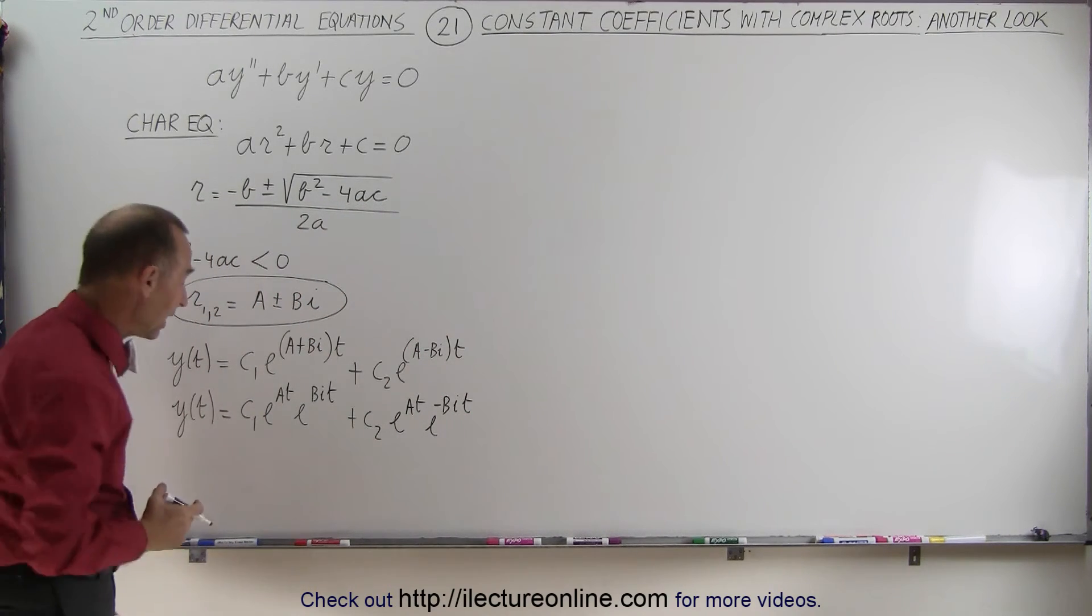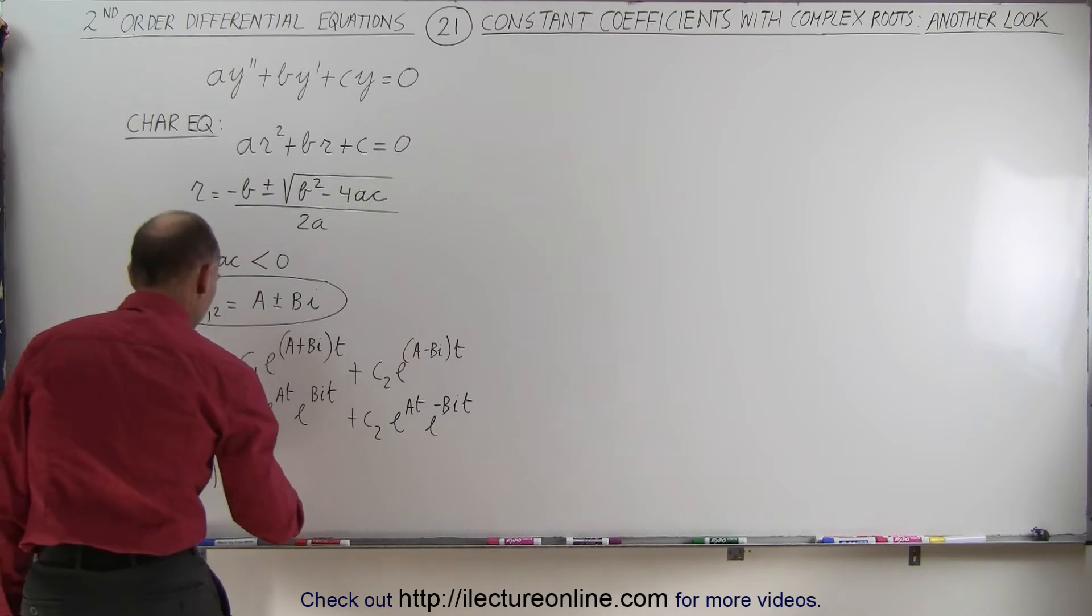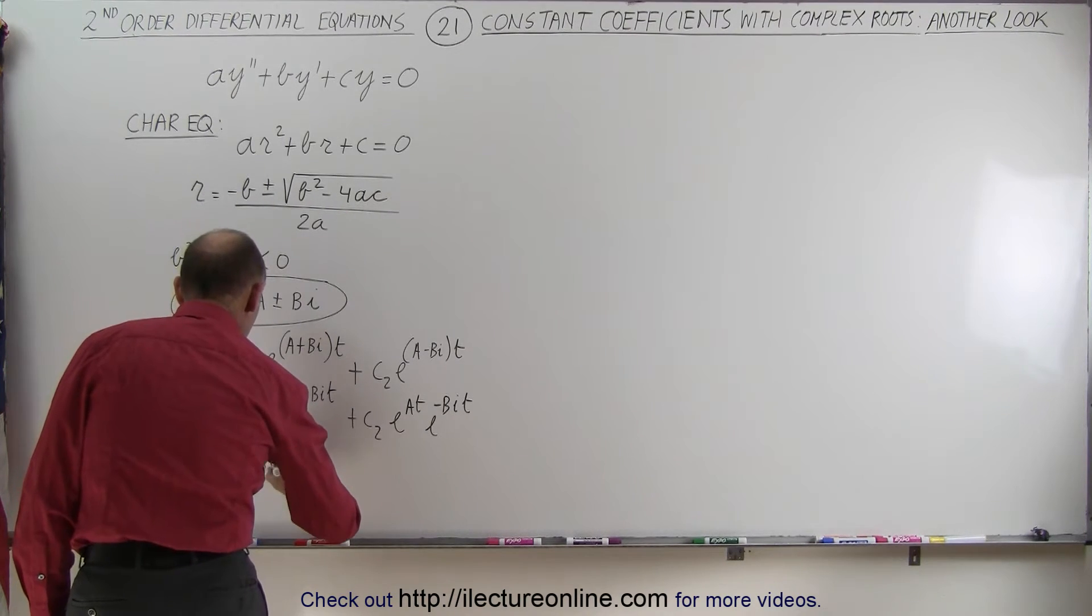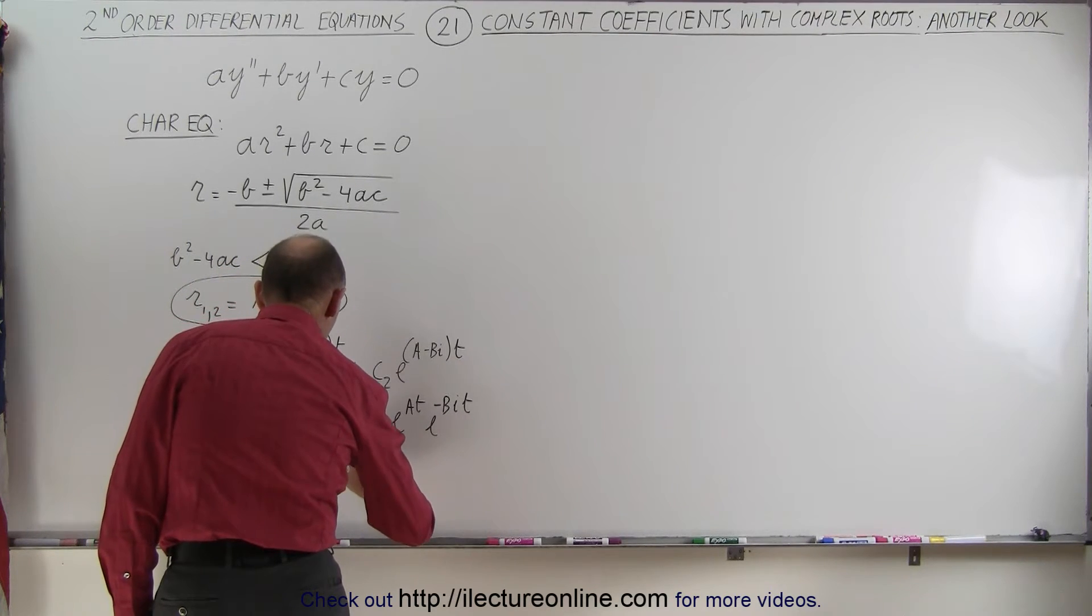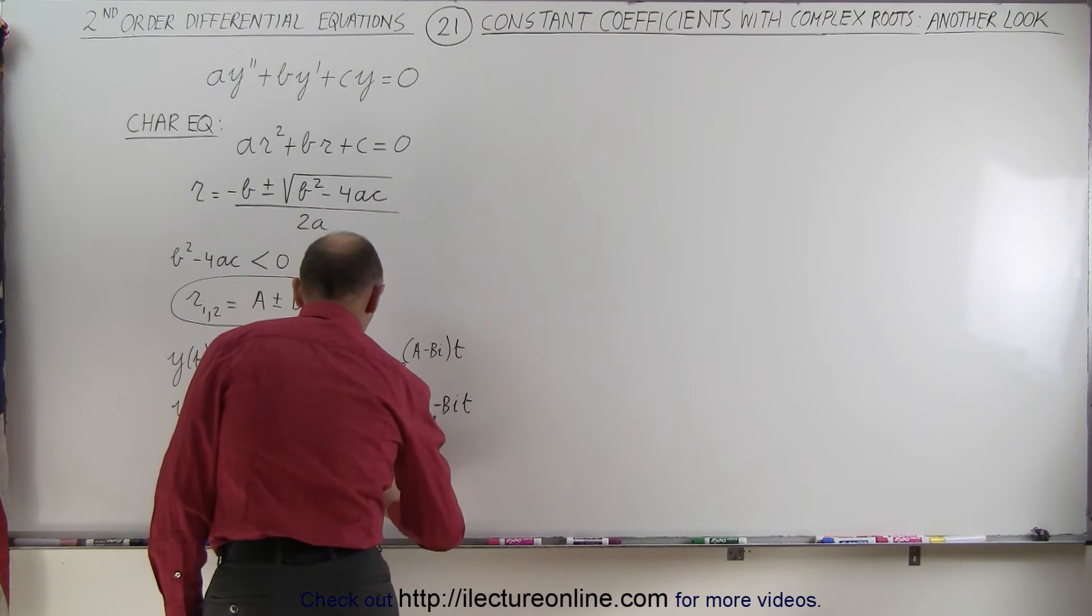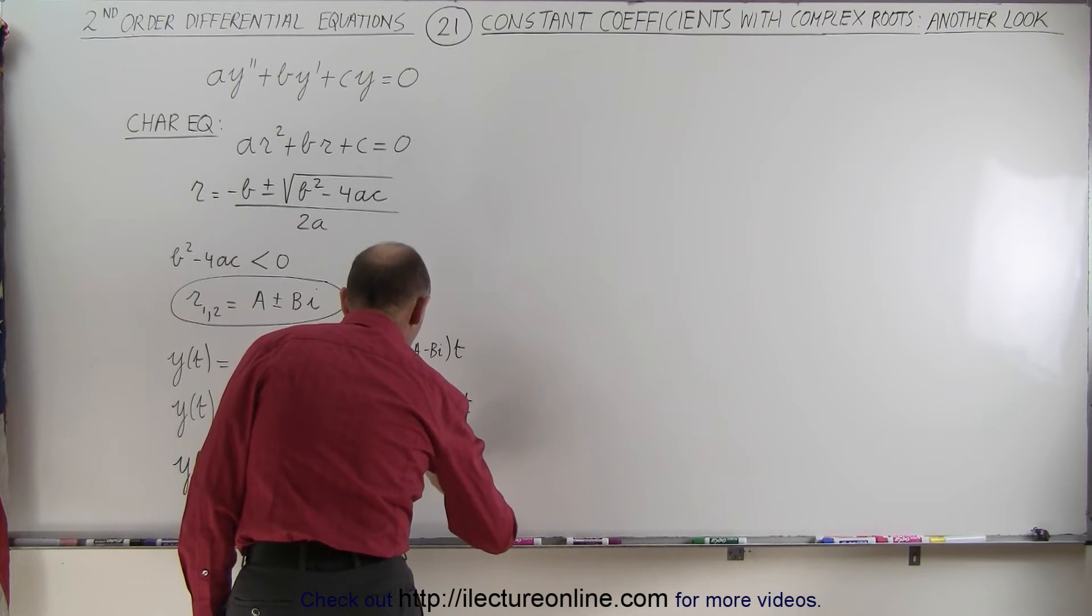Then we can factor out an e to the at. So we get y as a function of t is equal to e to the at times the quantity c1e to the bi t plus c2e to the negative bi t.